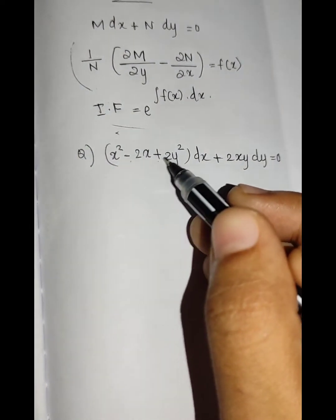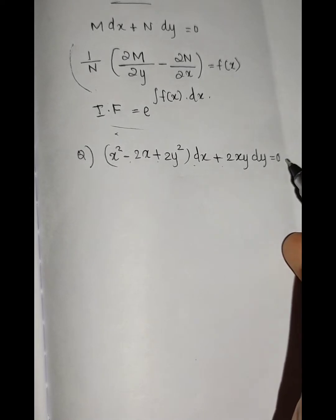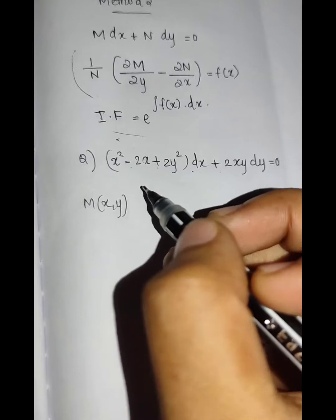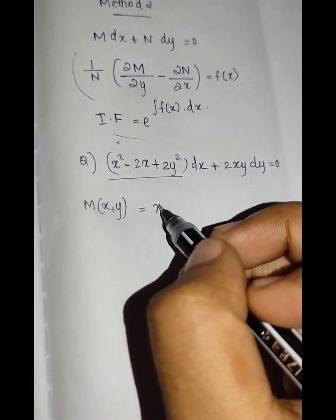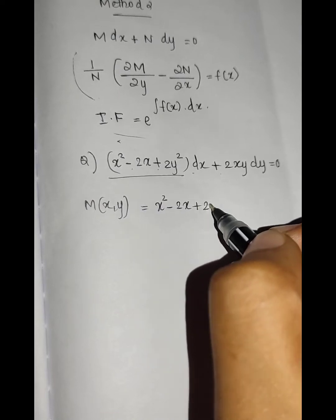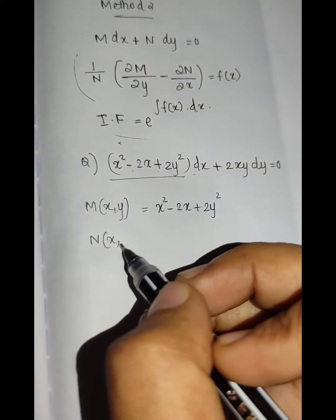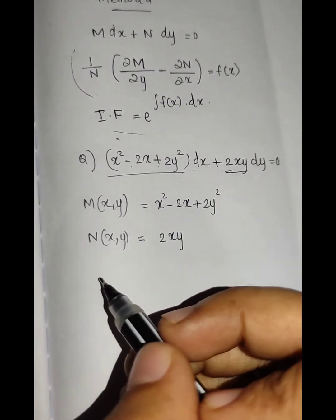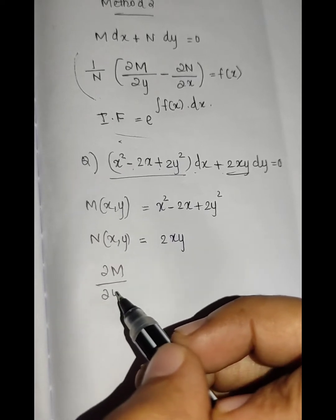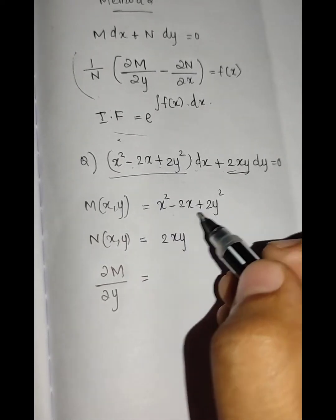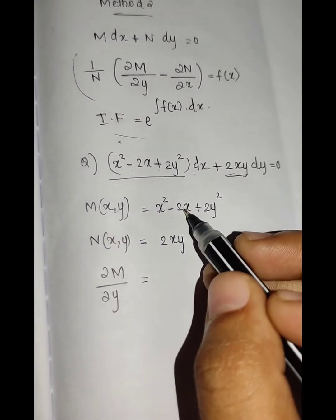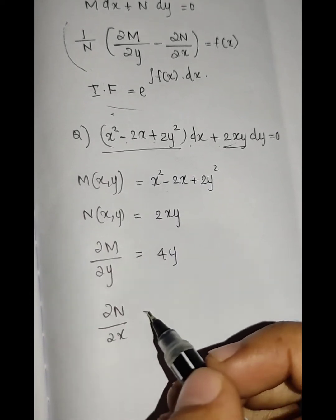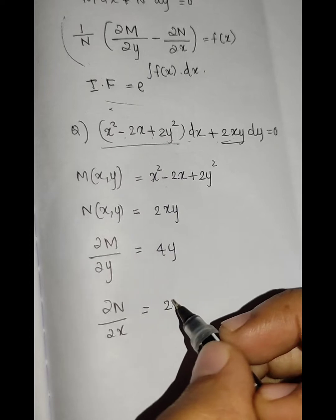The equation is x² - 2x²y² dx - 2xy dy equals 0. Then M(x,y) equals x² - 2x²y², and N(x,y) equals -2xy. ∂M/∂y equals -4xy and ∂N/∂x equals -2y.